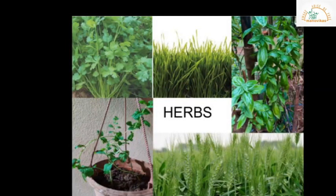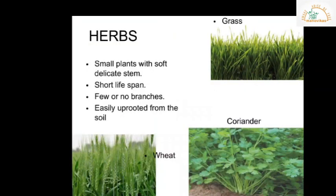Let us learn about herbs. Herbs are small plants with soft, green, and delicate stems. They have a short life span and can survive for one or two seasons, around three to four months depending upon the weather conditions. If well taken care of, they can last up to five to six months. Herbs have few branches or are sometimes branchless, and they can be easily uprooted from the soil.